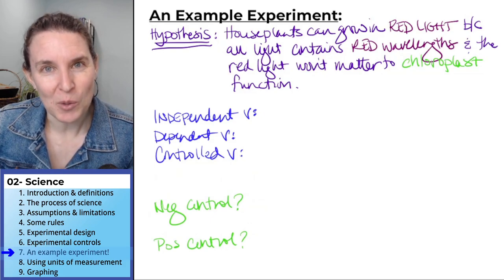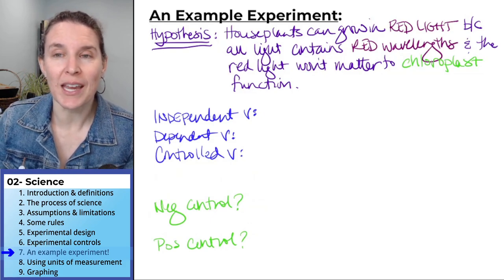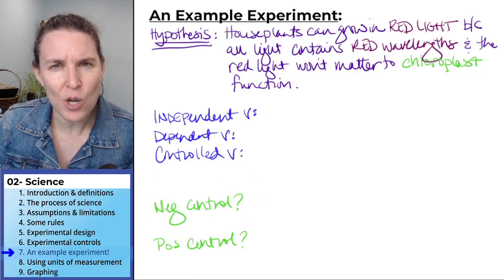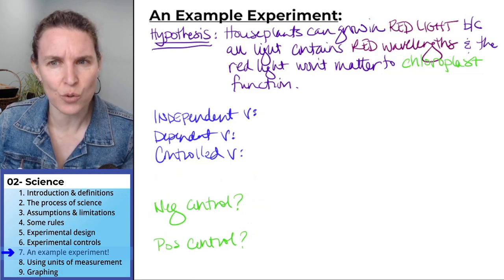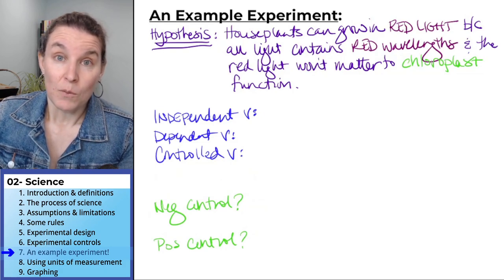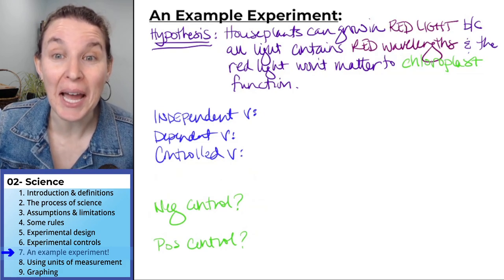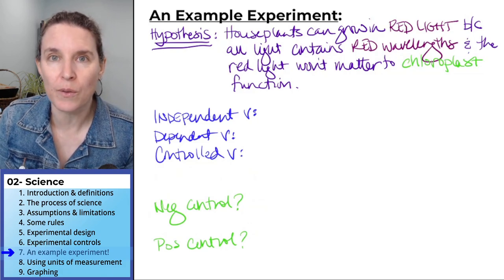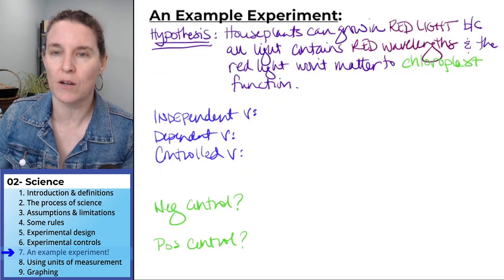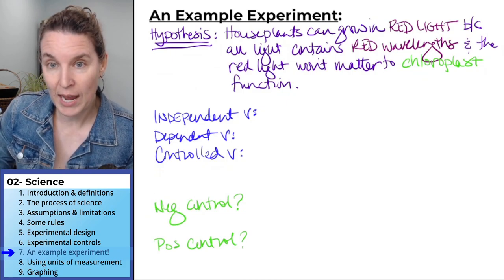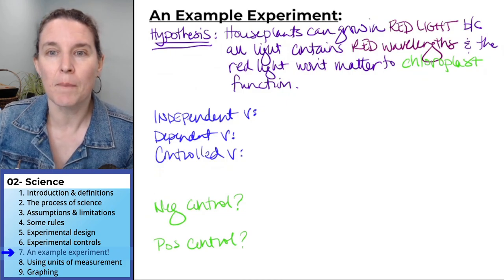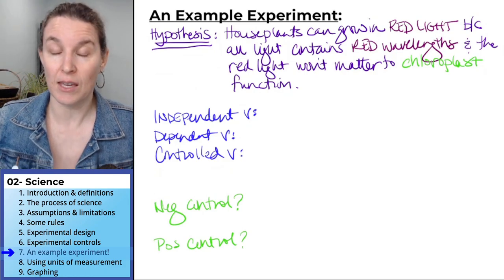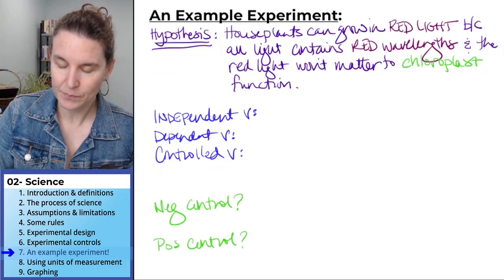And is it falsifiable? How do you know if the answer is no, they can't grow in red light? How are you going to know if that is true? Well, they might die or they're not going to have as robust growth. They might have fewer leaves. There are things that are going to happen to them that will indicate that they are not thriving in the red light.